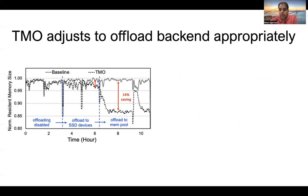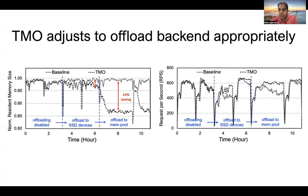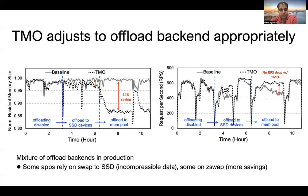Similarly, we then enabled z-swap, offloading to a memory pool. The data on these web servers is very compressible — we see about a one-to-four compressibility ratio. We see about 14 percent memory savings by offloading to z-swap. TMO was able to adjust automatically for a faster memory backend and save more memory compared to a slower SSD backend. TMO again made these servers no longer memory-bound with no RPS drops. In production, we use a mixture of offload backends — z-swap where we can for more memory savings, but also SSD-based swap for workloads with incompressible data. We have ongoing work to make the offload backend choice more dynamic.